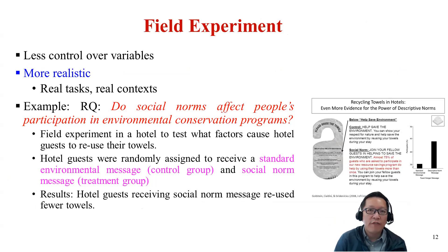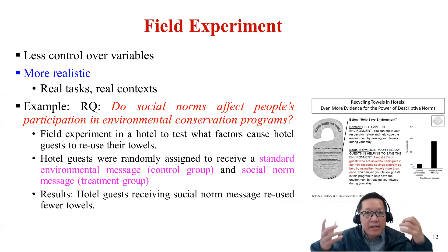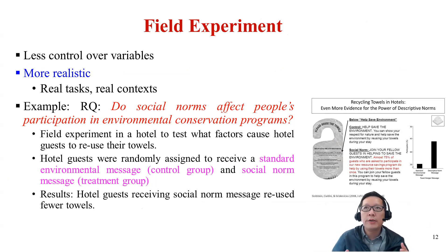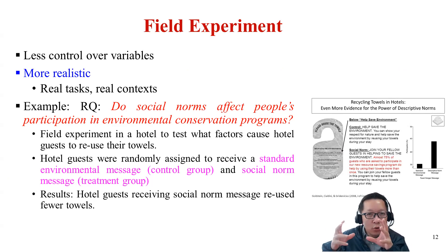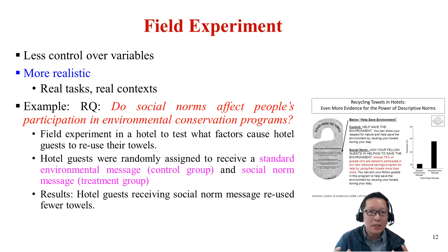The second type is called field experiment, because it happens in the field — in the real world. This can occur in real companies, schools, workplaces, hospitals, or public services. Field experiments are more realistic because you are experimenting with real people in real life. But they also have problems because there are so many other potential factors that could affect the validity and reliability of your findings — too many things you cannot control.